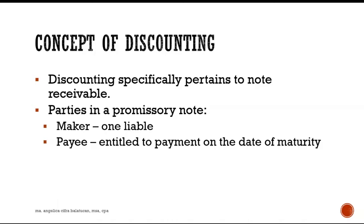To discount the note, the payee must endorse it — there should be an endorsement. Thus, legally, the payee becomes the endorser and the bank becomes the endorsee. For example, A is the maker and B is the payee. A is the maker — he is the borrower, the one who made the note, the one who owes.